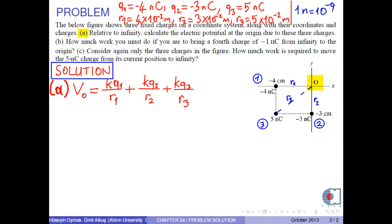The constant K is common in all terms. Therefore, we can write K times Q1 over R1 plus Q2 over R2 plus Q3 over R3. At this point, we can substitute the numerical values into this formula.